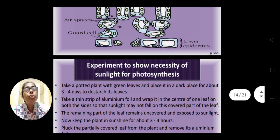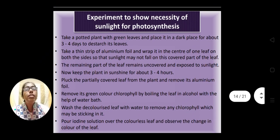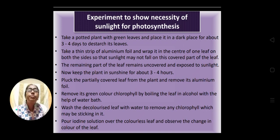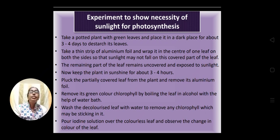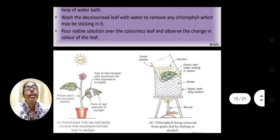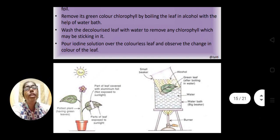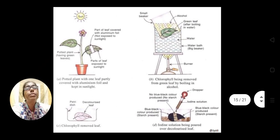There are experimental proofs that sunlight is essential for photosynthesis. I will explain the experiment from the diagram; the procedure, observations, and conclusions are given in the slide. In the first diagram, a potted plant has one leaf partly covered with aluminium foil. The purpose of wrapping with aluminium foil is so that when the plant is kept under sunlight, the covered portion will not receive sunlight.